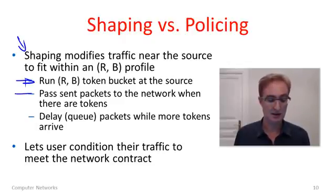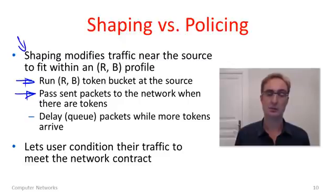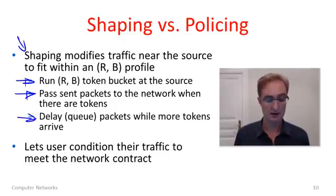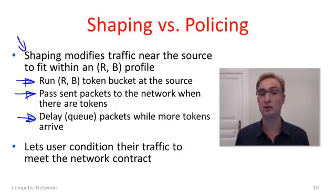As packets are generated at the source, we pass them into the network when there are tokens in the bucket available to use. However, if we have a packet that's generated and there are no tokens in the bucket, then we have to delay or queue the packets at the source until the token bucket has more tokens.